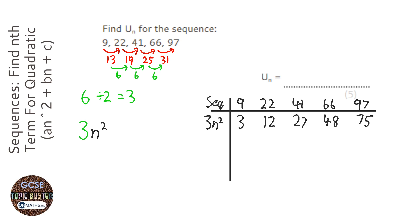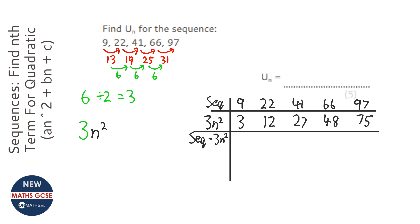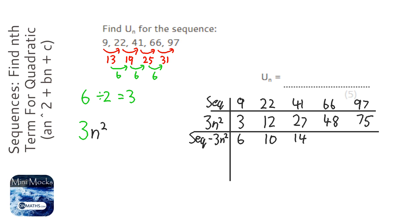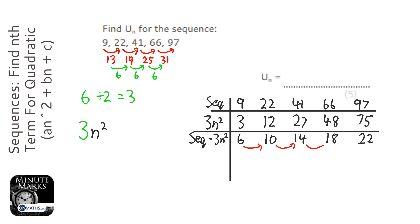Now what we want to do is take 3n squared out of our sequence. So I'm going to do our sequence and take away 3n squared from it. Basically: 9 take away 3 is 6, 22 take away 12 is 10, 41 take away 27 is 14. And I'm just going to keep subtracting them. Now you might notice that we've got a linear sequence now. This linear sequence is going up in 4s — each one is going up in 4s.